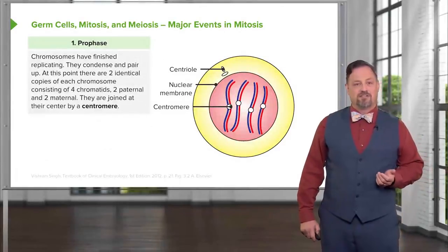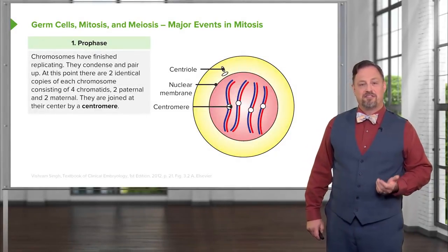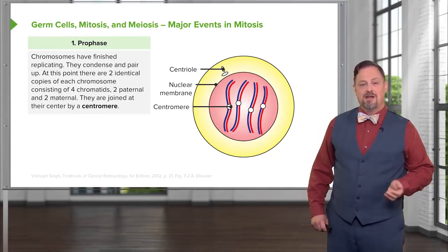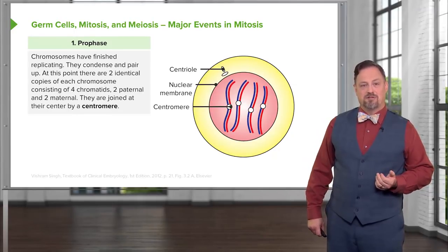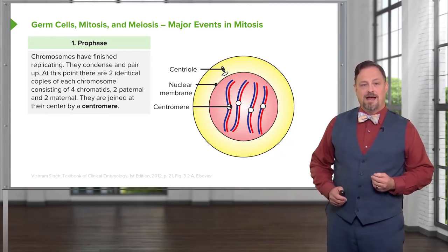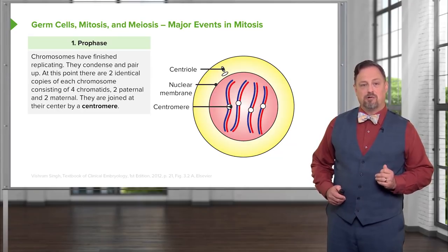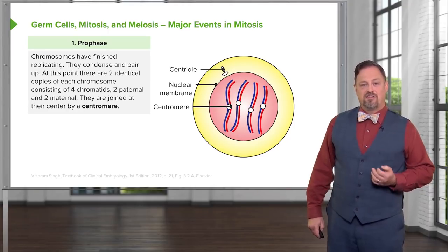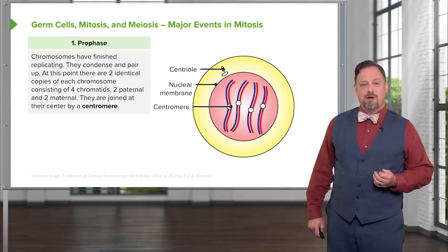The first step in cell division is called prophase. At this time, the chromosomes have finished replicating. We've got the diploid number of chromosomes and they condense down and pair up. At this point, we have two identical copies of each chromosome therefore four chromatids total, two paternal and two maternal in each pair. They are joined at their center by a protein called a centromere.